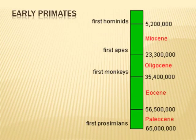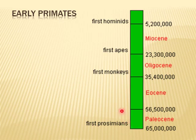This is the estimated time period of origin of early primates. The first prosimians evolved 65 million years ago in the early Paleocene, while the first monkeys appeared in the early Oligocene, then the first apes in the early Miocene, and then the first hominids emerged.